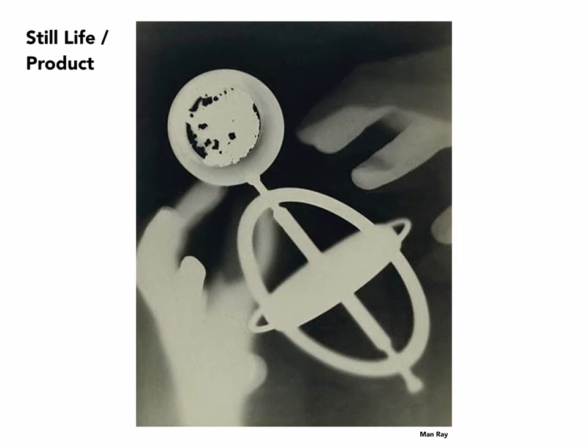This is by Man Ray. It's a photogram — what he referred to as rayograms. It's again very simple objects: a gyroscope and what looks like maybe a part of a watch, and a pair of hands, more than likely his. Photograms are made by placing objects on photosensitive paper, exposing the paper to light briefly, and then processing it as a regular print. As a result, we end up with these silhouettes.